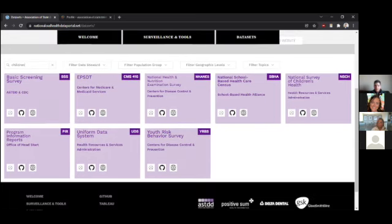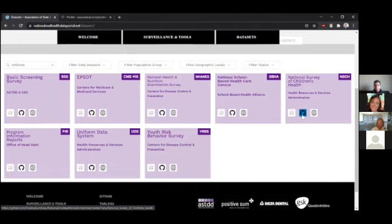The National Survey Children's Health is just like has a wealth information there. If you were to click this World Wide Web logo, it would take you to childhealthdata.org, which is a great website that you can extract data from there. If you were to click on the GitHub logo, it would take you to kind of a background detail page about the data, learn about the data set, learn what we did with the data set, how we obtained it, what we did to get it into Tableau.